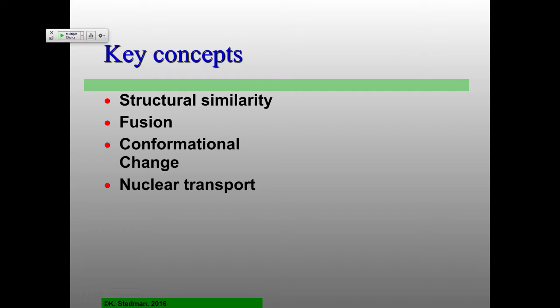Key concepts for today: Structural similarity may be a way to address really deep phylogeny — how viruses infecting extremely different hosts might actually be related to each other. Fusion, particularly for enveloped viruses but also for non-enveloped viruses, is how they get inside cells. It all has to do with fusion of membranes, and most of that involves conformational change — specifically the viral receptor-binding proteins that undergo conformational change.